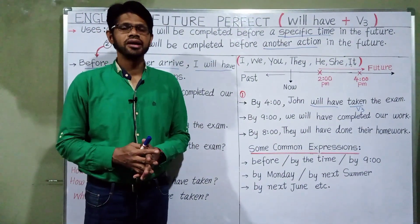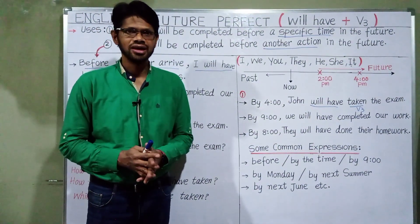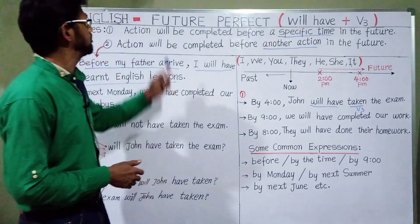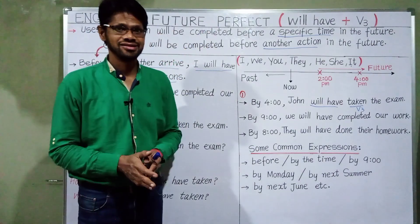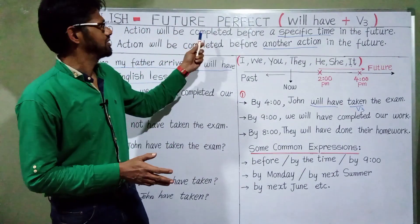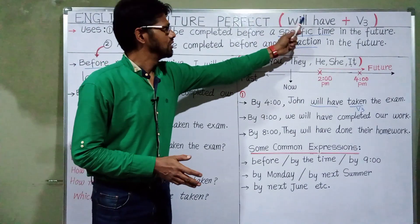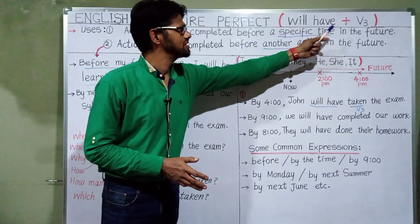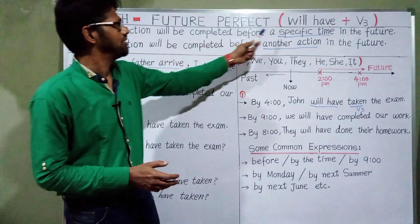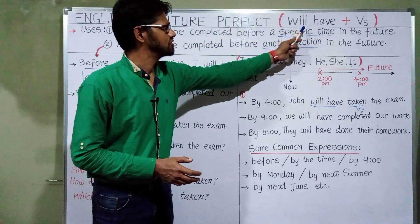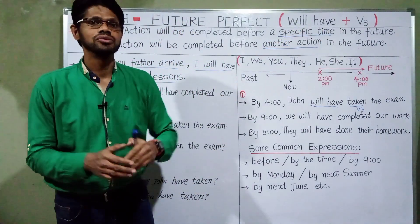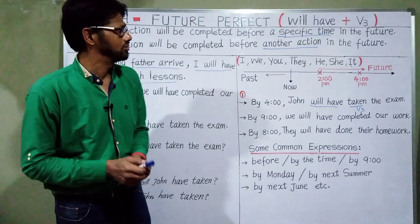Hello everyone and welcome back to English with Ansar. In this video we are going to talk about future perfect tense. In this tense we use will have plus V3 form. To express this tense we have the structure will have plus V3 form — V3 form means verb third form.